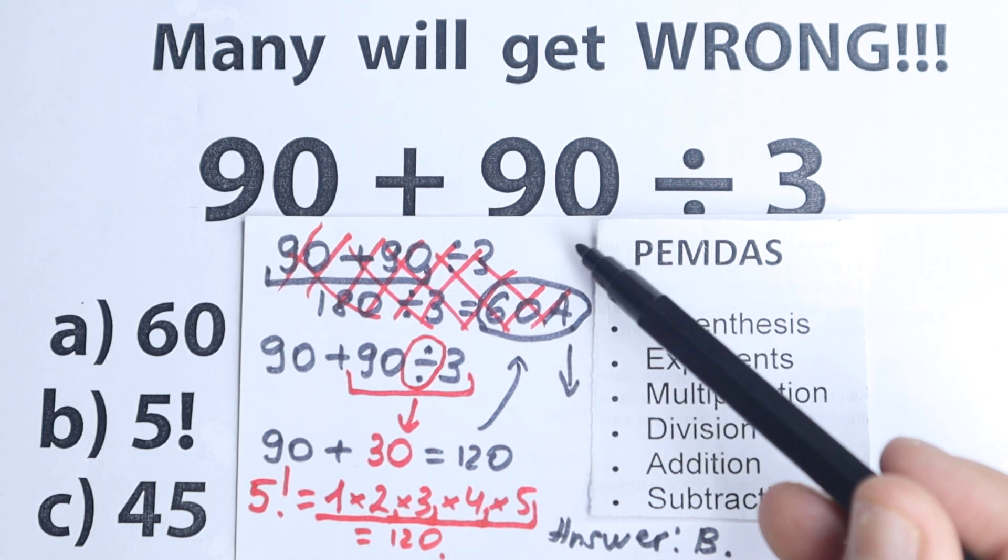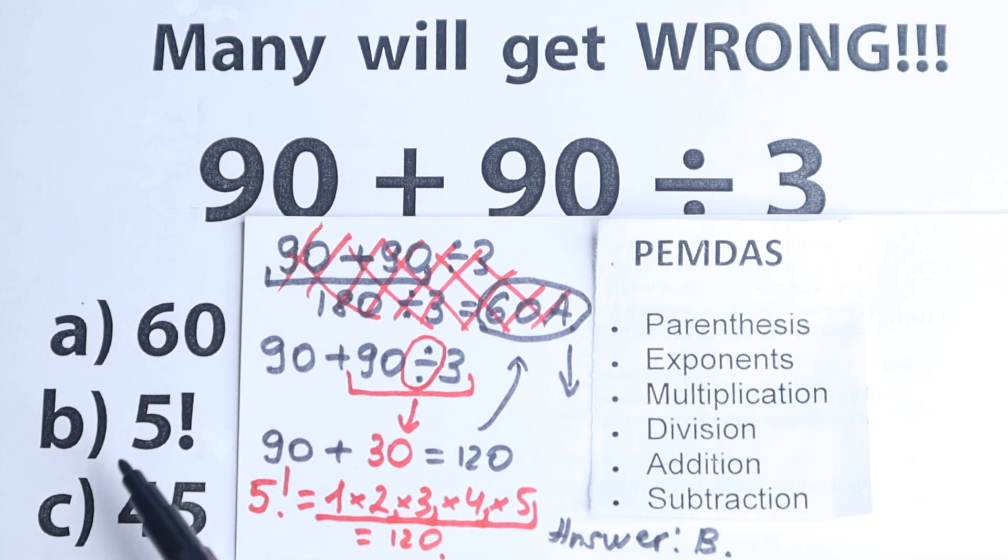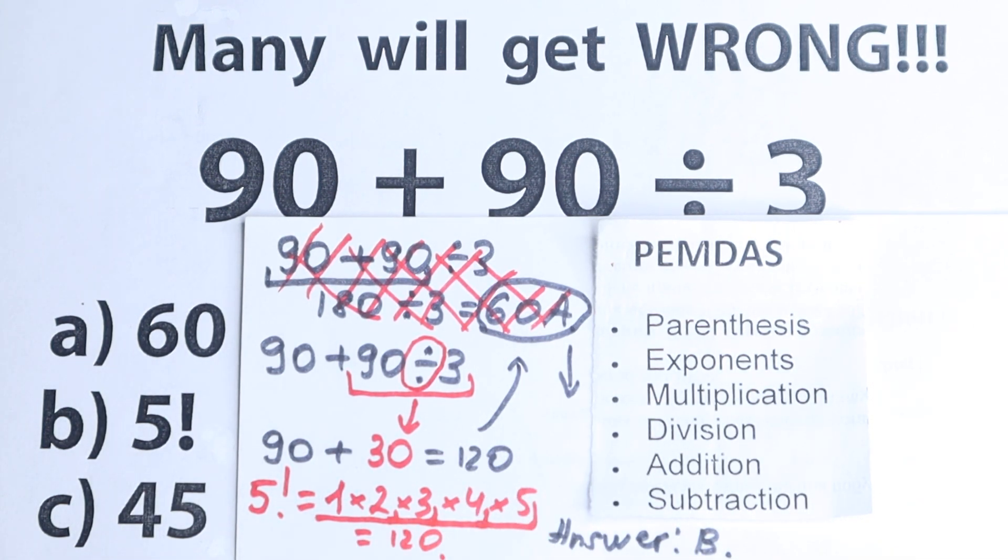A lot of students do this common mistake. They add at first, then divide, and they don't see the answer. So as you can see, 5 factorial is a correct answer to this problem.